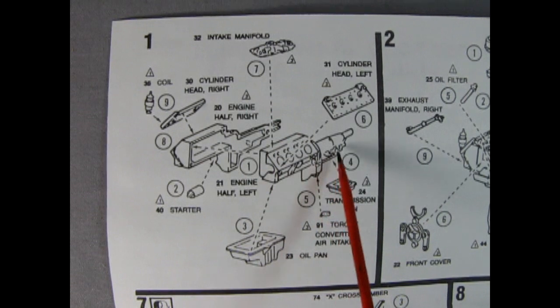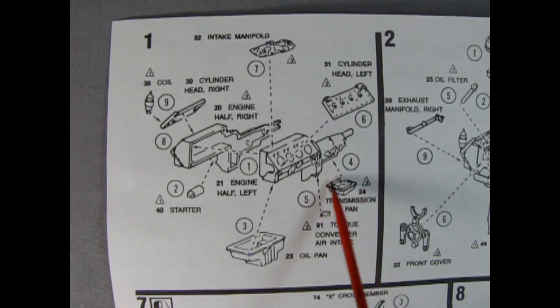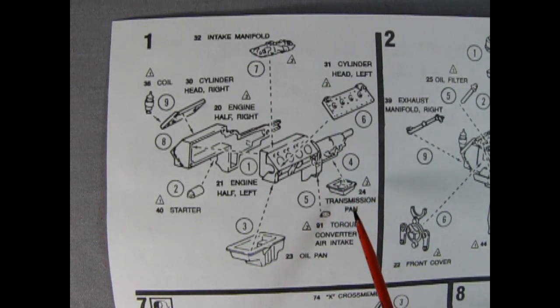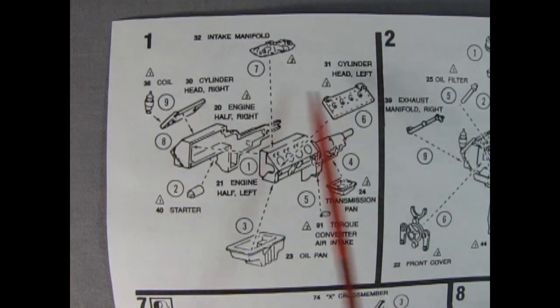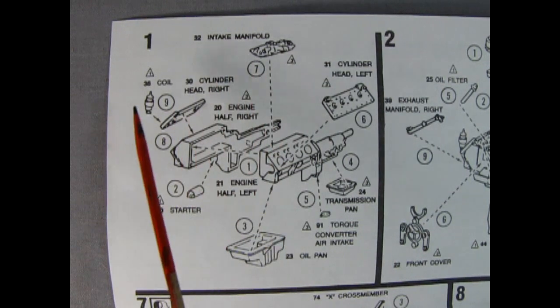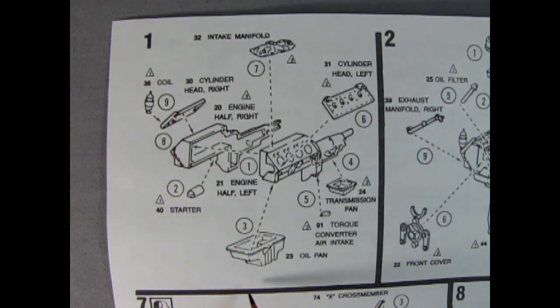There we've got our engine block with the transmission. We've got a separate transmission pan. There's a torque converter air intake which goes up in here. We've got our left and right cylinder heads, intake manifold, the coil, the starter and the oil pan.